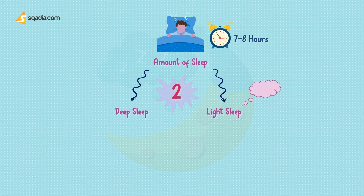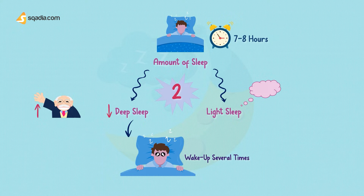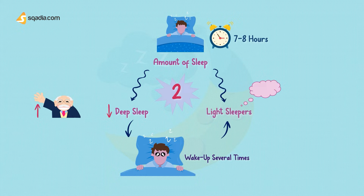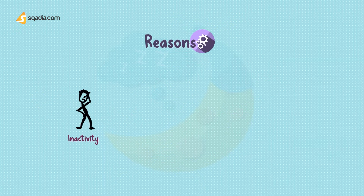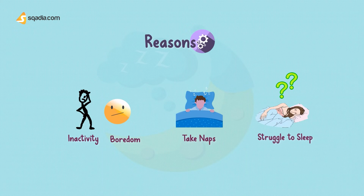As people age, they tend to spend less time in deep sleep, perhaps explaining why older people often wake up several times each night and are considered light sleepers. Some cases of sleep problems occur for simple reasons, such as inactivity or boredom, leading you to take naps and therefore struggle to sleep at night.